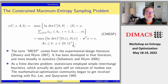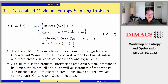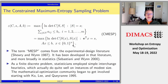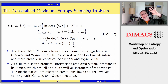This lets us frame precisely the maximum entropy sampling problem. We're given a matrix C, a size s, and we want to find a maximum-entropy subset of size s. We also have side constraints, which are very useful in real applications. For example, there may be a cost associated with observing each random variable and a budget constraint. There can also be logistics constraints — like picking at least one variable from a given set, or equity requirements.